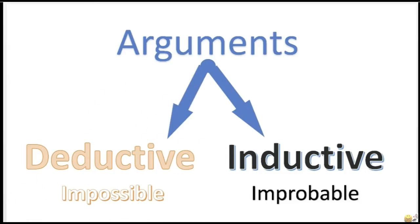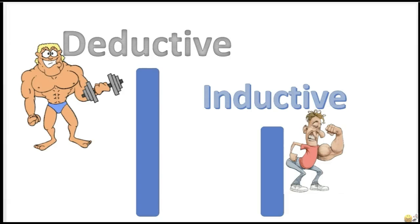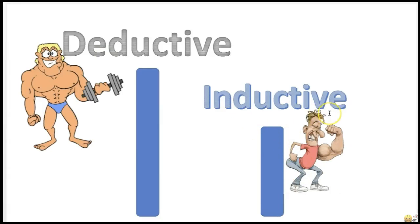Arguments are either deductive or inductive. The strongest type of argument you want is a deductive argument — if the premises are true, it would be impossible for the conclusion to be false. Inductive arguments are also strong, but just not as strong as deductive arguments.